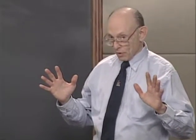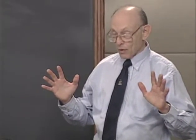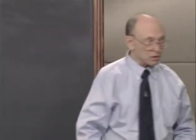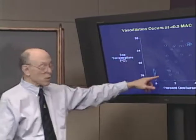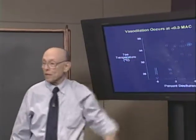There are arteriovenous shunts within both the toes and the fingers which allow you to lose or conserve heat depending on whether they're open or not. We measured the temperature in the toe and turned the desflurane on. When we got to about 2% desflurane—less than a third of MAC, about a quarter of MAC—toe temperatures went up from 26 degrees to 34–35 degrees. That's not unique to desflurane; it would happen with isoflurane or sevoflurane, any potent inhaled anesthetic.